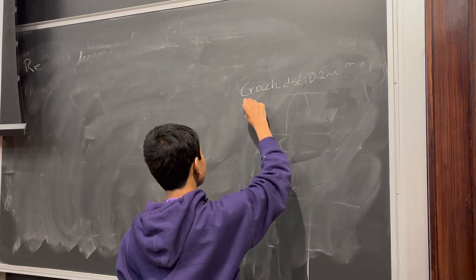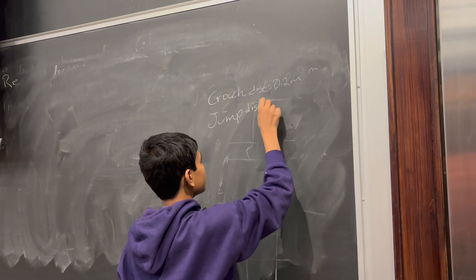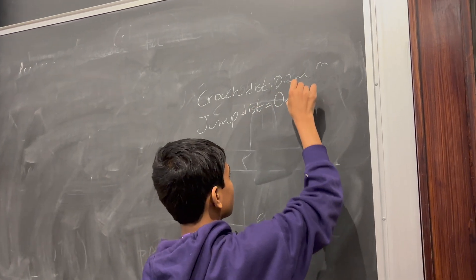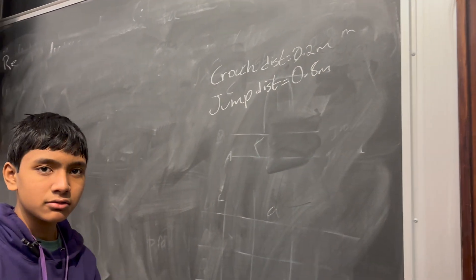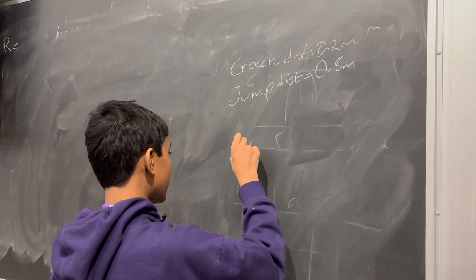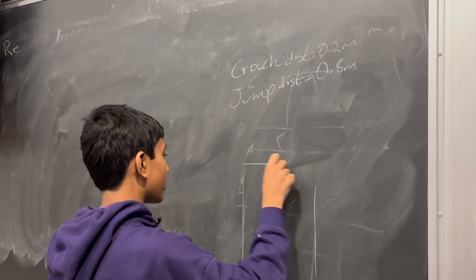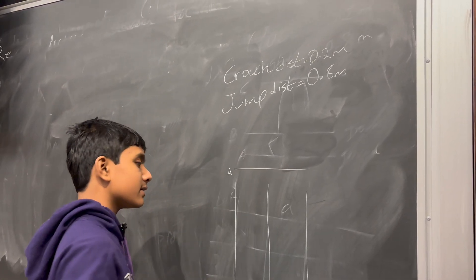Then he manages to jump a distance of 0.8 meters or 80 centimeters above the ground. Our goal here is, let's first draw a little diagram of what's happening. Let's say this is point A.